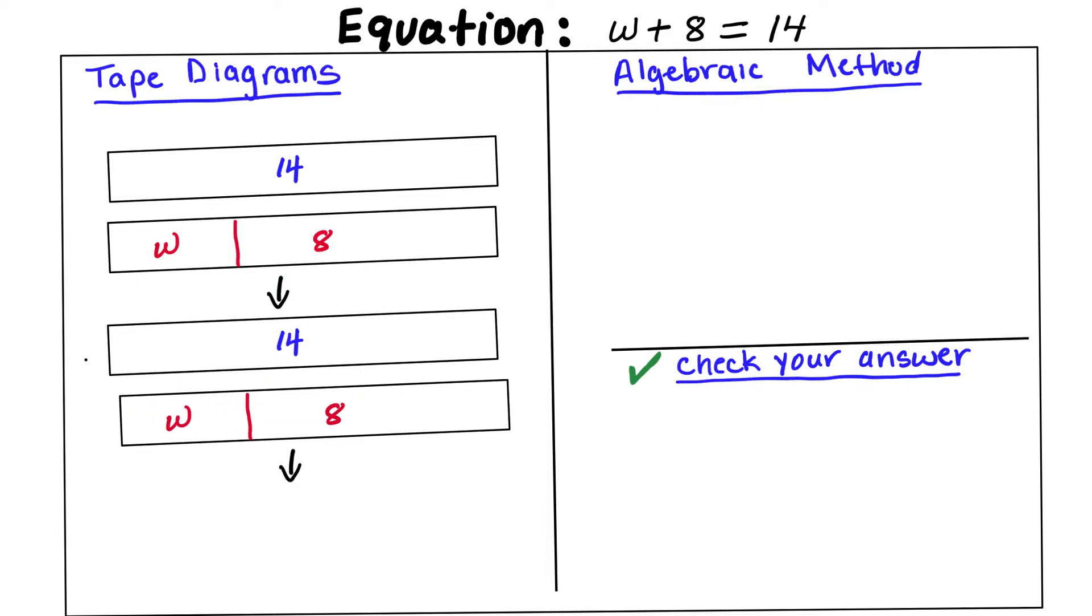Now what we're going to do is the step where we want to find what w is. In this case, I'm going to cut 14 right here, since we know that this part and this part are the same. So those two parts are the same.